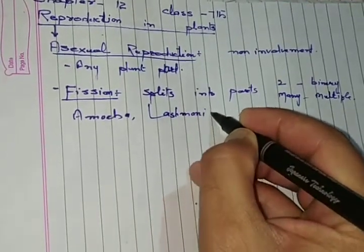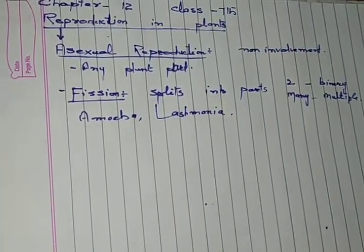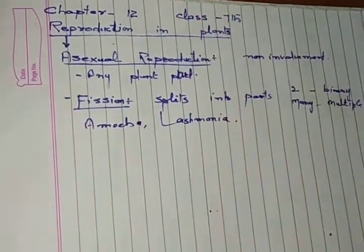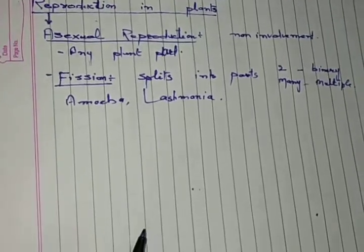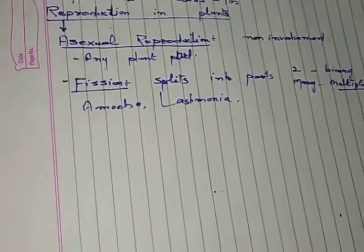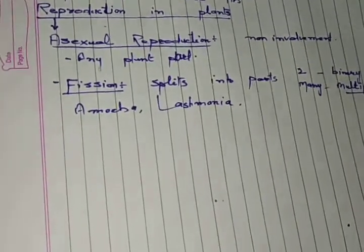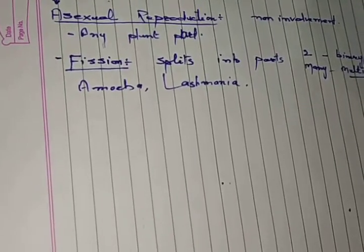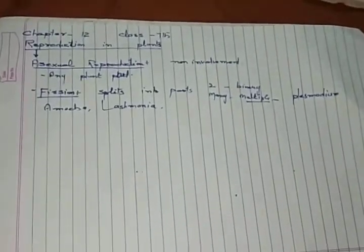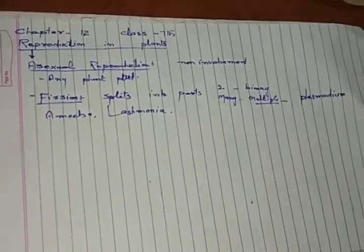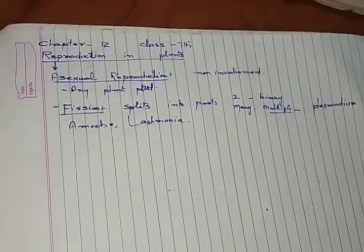The organism can also be divided into many parts, which we call multiple fission. Multiple fission usually is seen in Plasmodium vivax, which is the main causal agent of disease malaria. In this way, malaria is spread quite quickly.